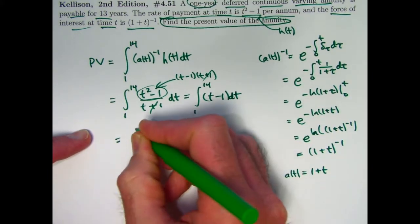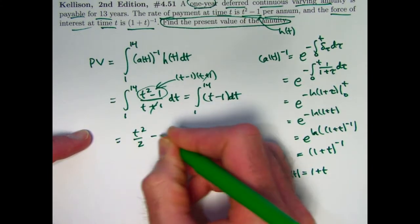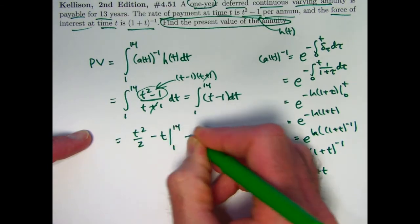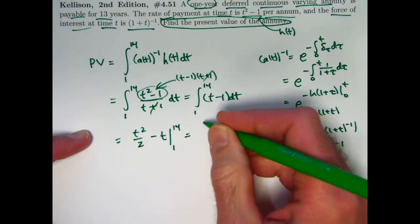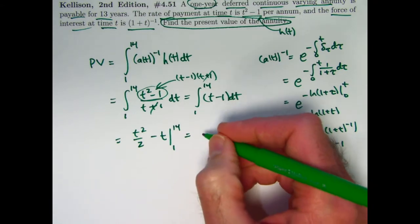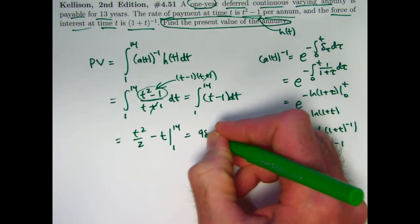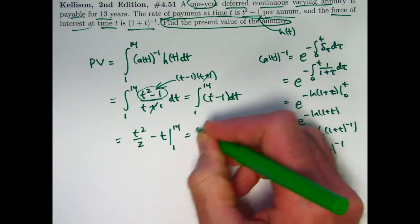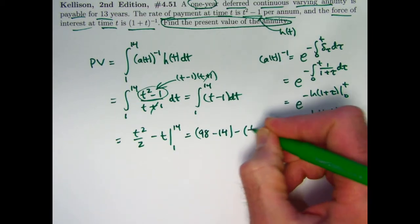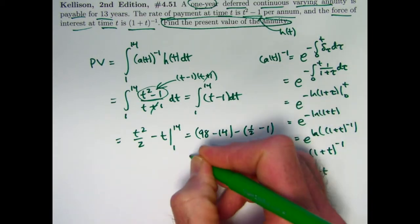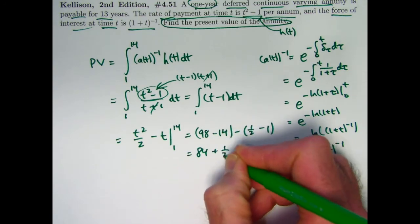Pretty easy integral to do. We get t squared over 2 minus t evaluated from 1 to 14. 14 squared is 196. 196 divided by 2 is going to be 98 minus 14. And then subtract what you get when you plug in 1.